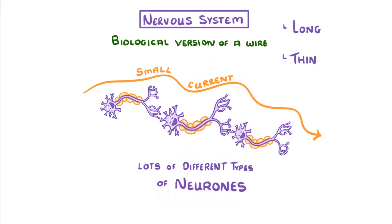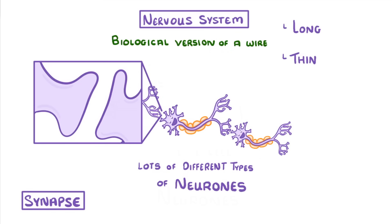For one nerve cell to communicate with another, we need a synapse, which is this connection between the cells. Whenever an electrical impulse hits the end of a nerve, it causes the release of some chemicals, which diffuse across the gap to the next nerve cell, where they can trigger another electrical impulse. This new electrical impulse will then continue along the new neuron all the way to the other end, where it will hit another synapse, and the whole thing will start over.